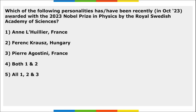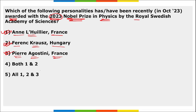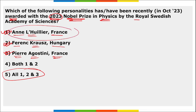Regarding the 2023 Nobel Prize in Physics: all three options are rightly mentioned — Anne L'Huillier of France, Ferenc Krausz of Hungary, and Pierre Agostini of France. All three were awarded the Nobel Prize in Physics. Anne L'Huillier became the fifth woman to receive the Nobel Prize in Physics.